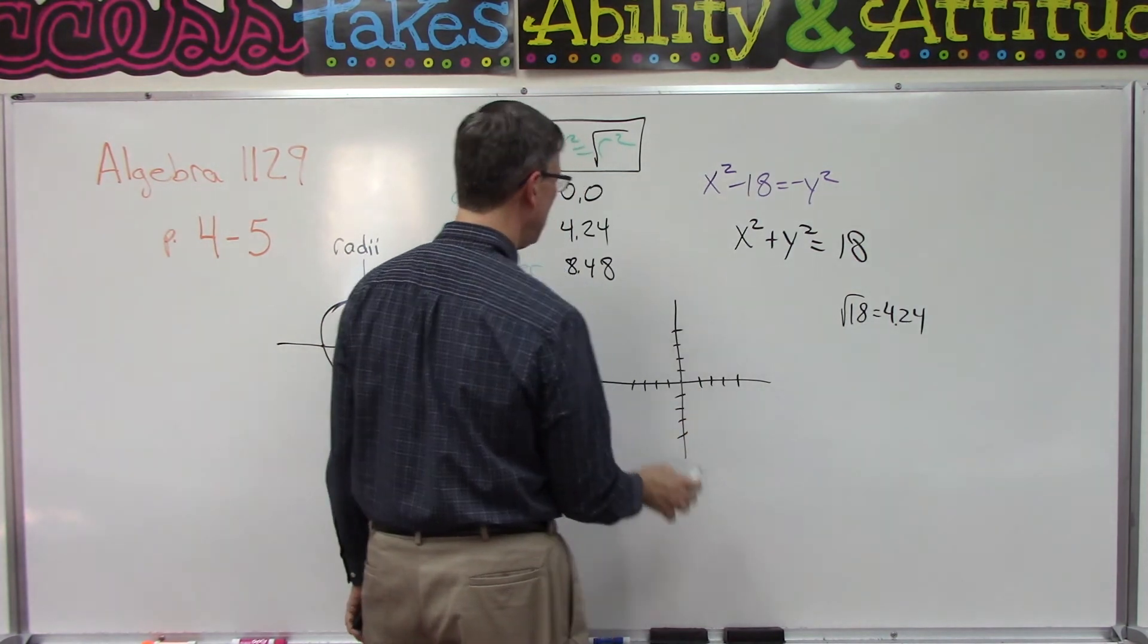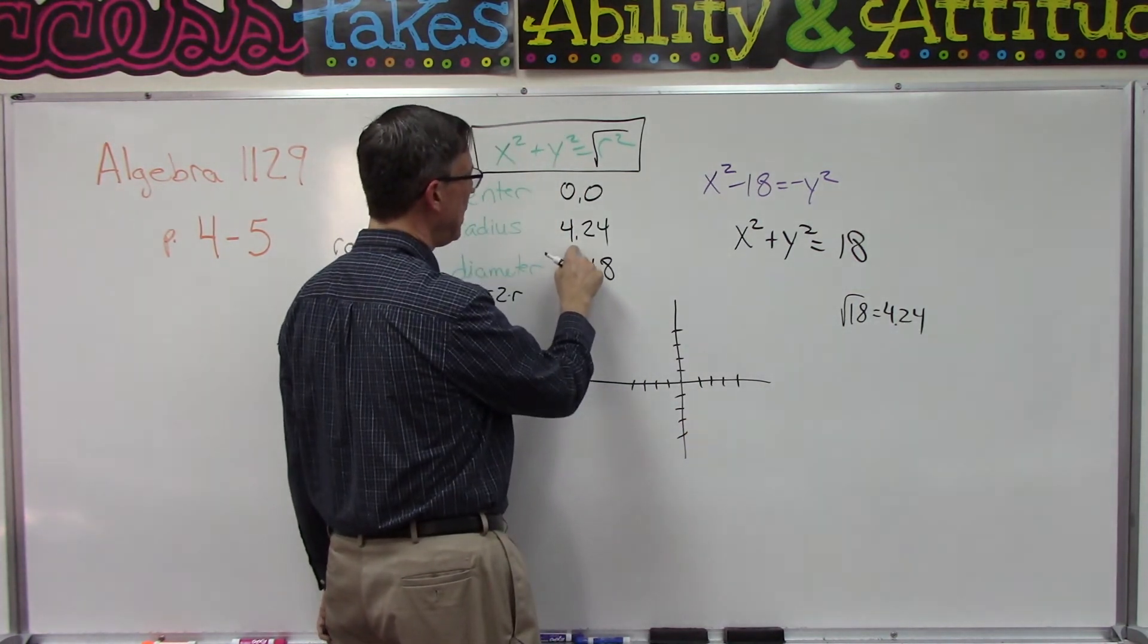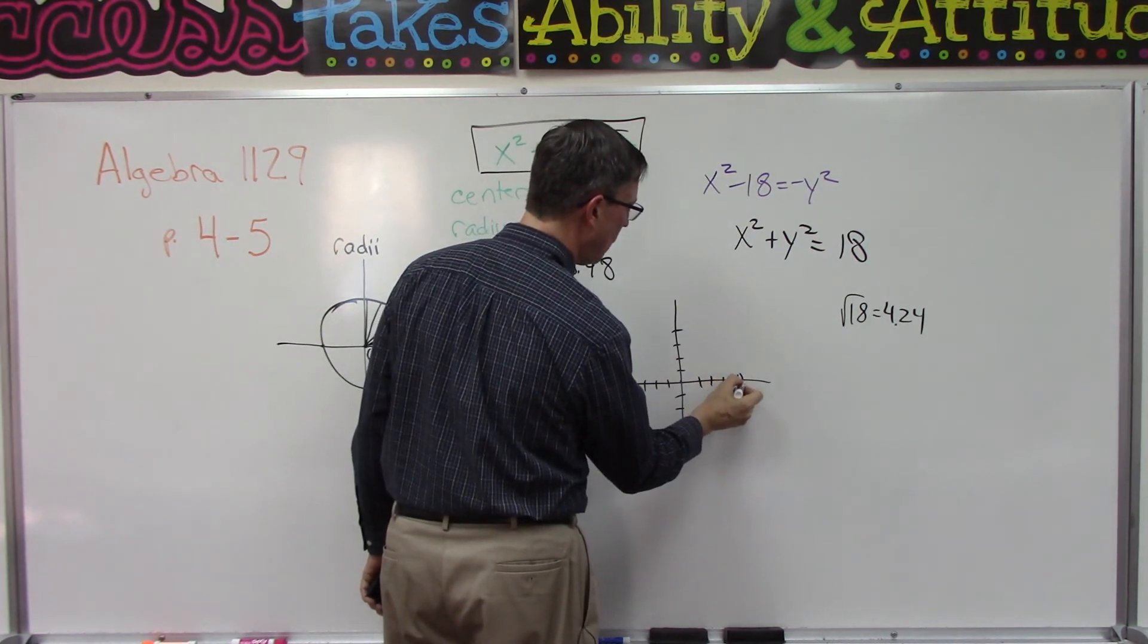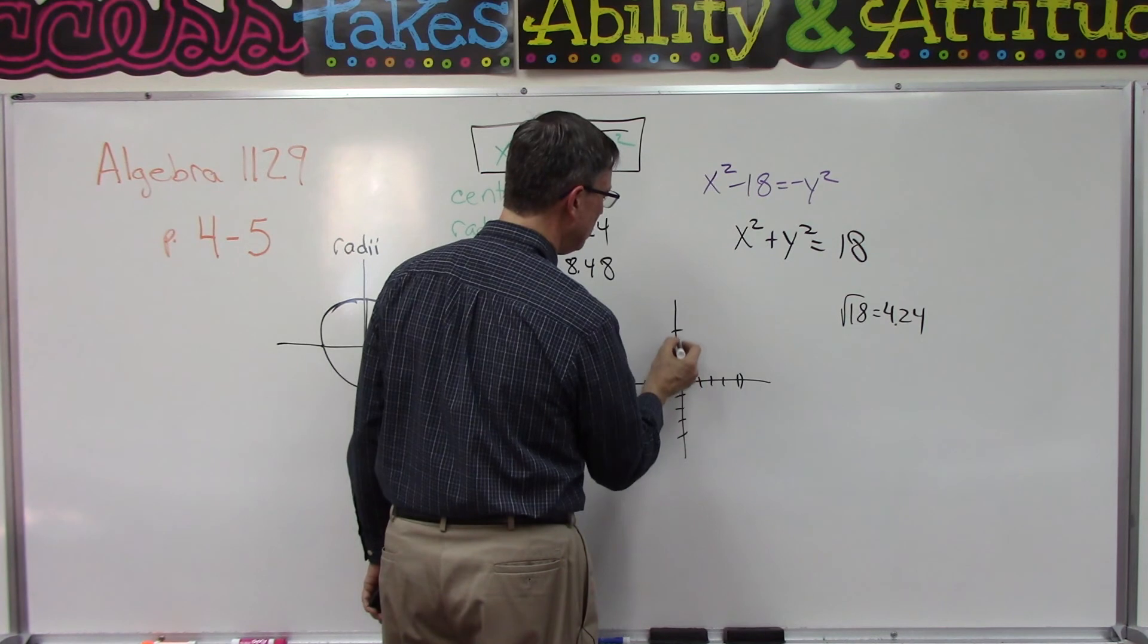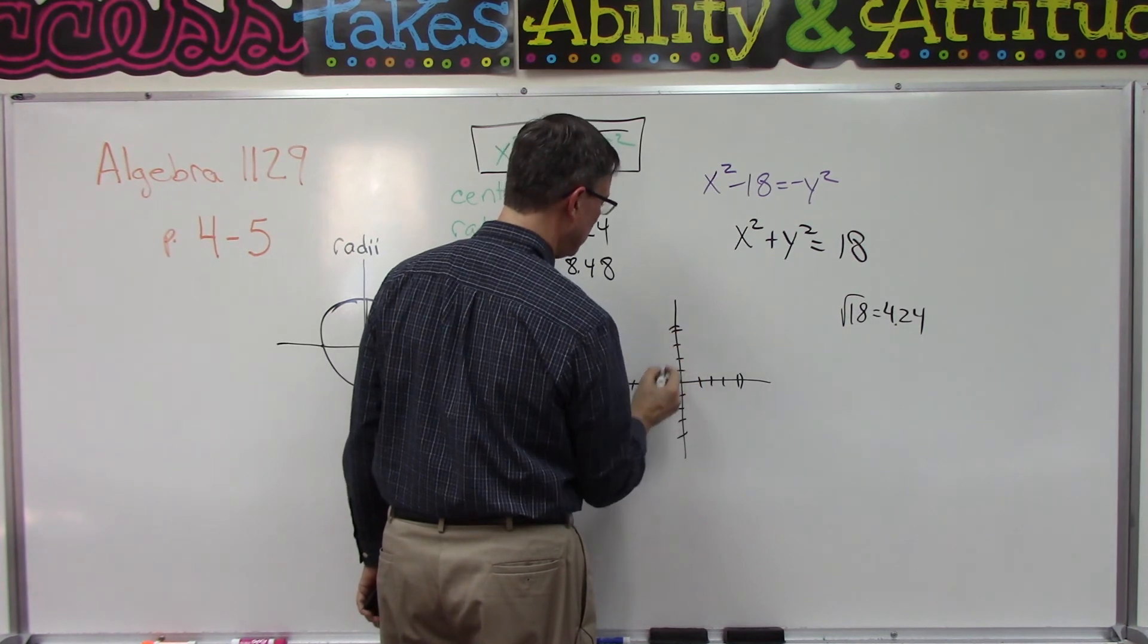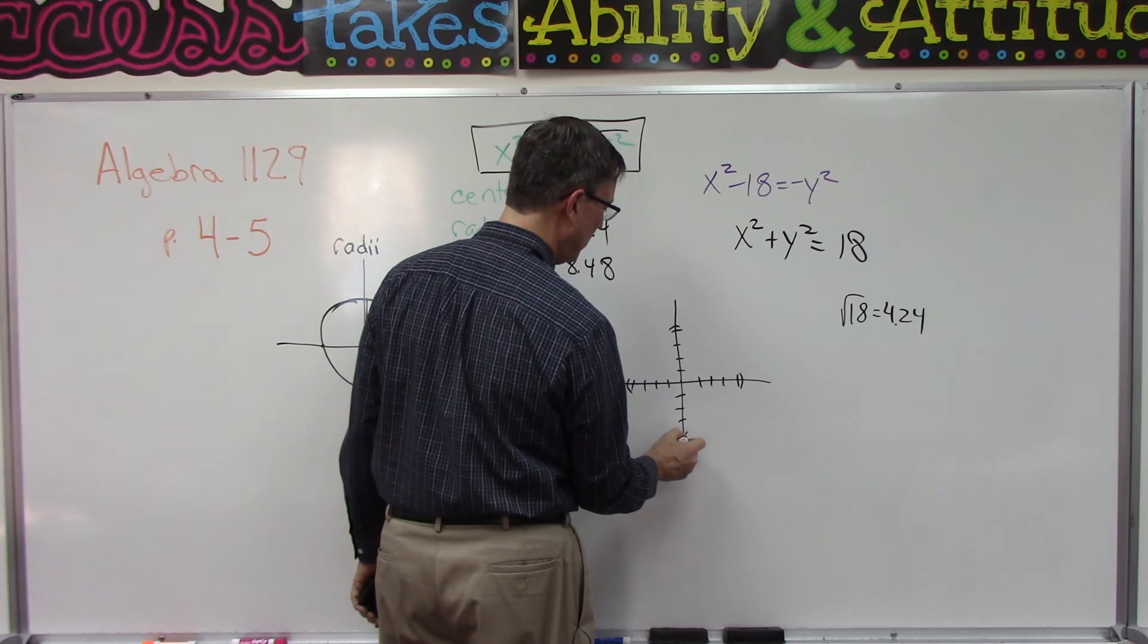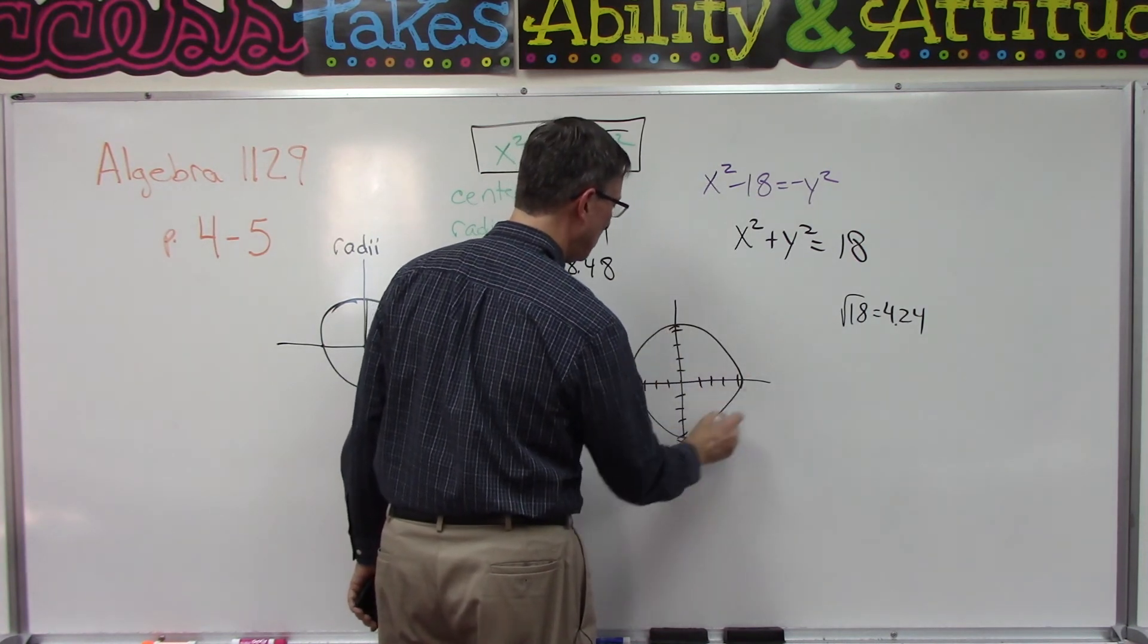So they give you graph paper. You're going to look at the radius being just a little bit past four, so maybe right here. And then you go up one, two, three, four, just a little bit past there. A little bit past four, a little bit past four.